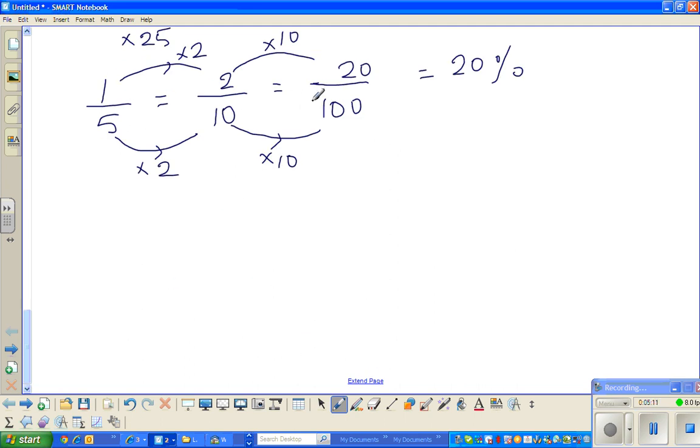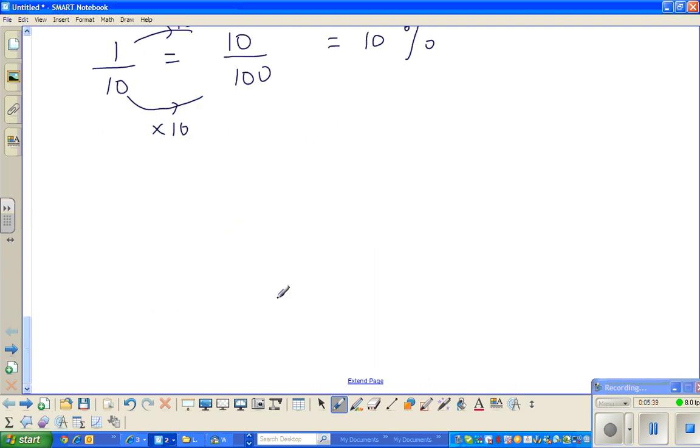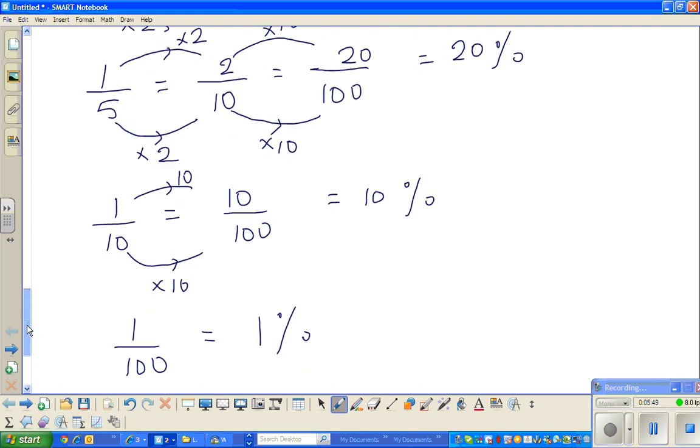And finally, 1 tenth is 10 out of 100. The same logic, 10 goes in 100 10 times. So multiply the denominator with 10, so also multiply the top with 10. So this is 10%. And finally, one more, 1 out of 100 is 1%. So we have seen 1%.